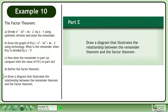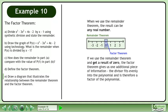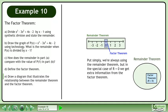Now we'll move on to Part E: draw a diagram that illustrates the relationship between the remainder theorem and the factor theorem. When we use the remainder theorem, the result can be any real number. If we use the remainder theorem and get a result of 0, the factor theorem gives us one additional piece of information — the divisor fits evenly into the polynomial and is therefore a factor. Put simply, we're always using the remainder theorem, but in the special case of r equals 0 we get extra information from the factor theorem.